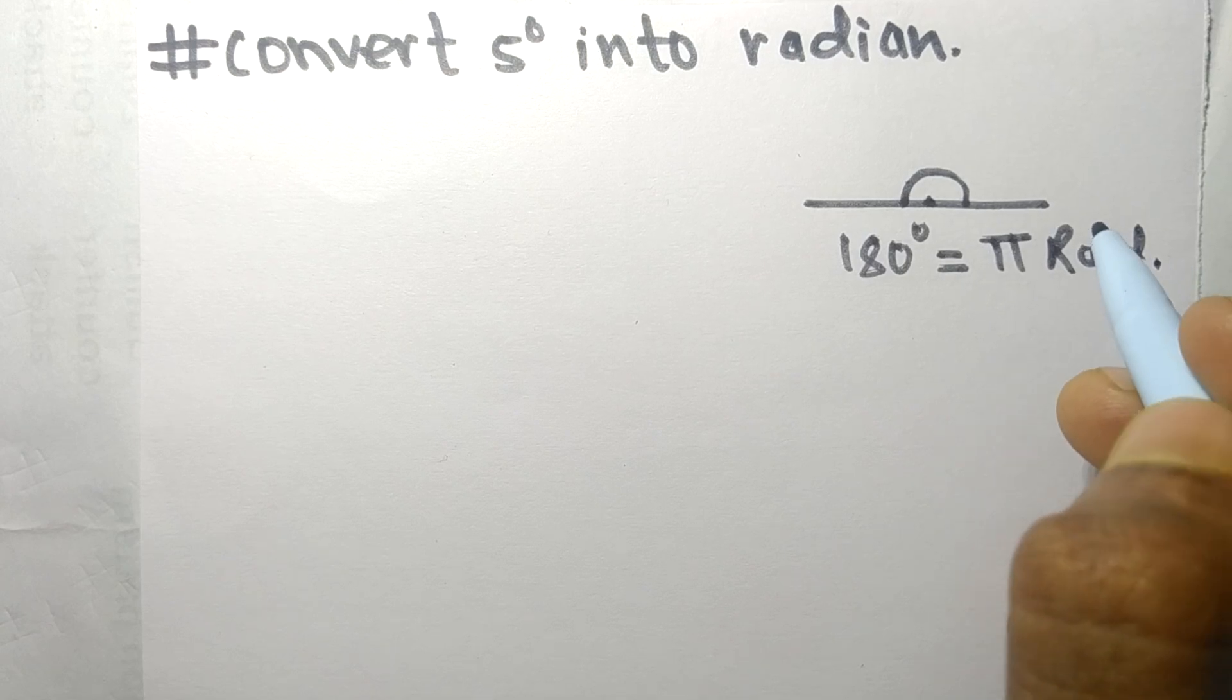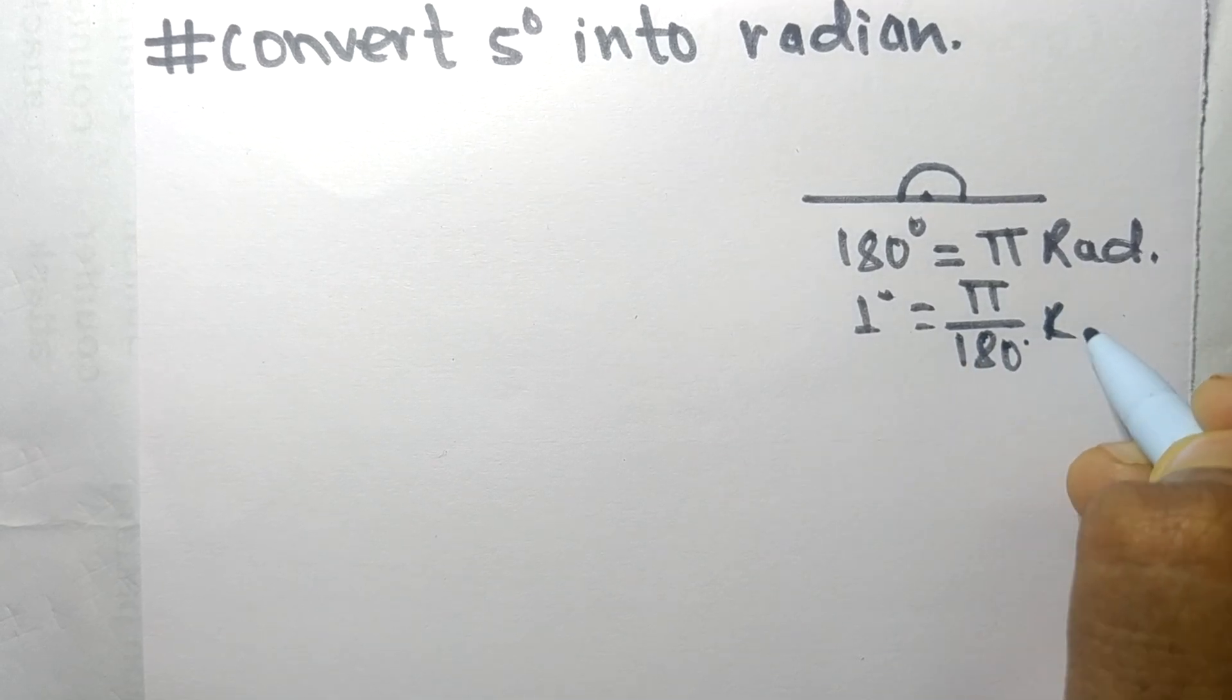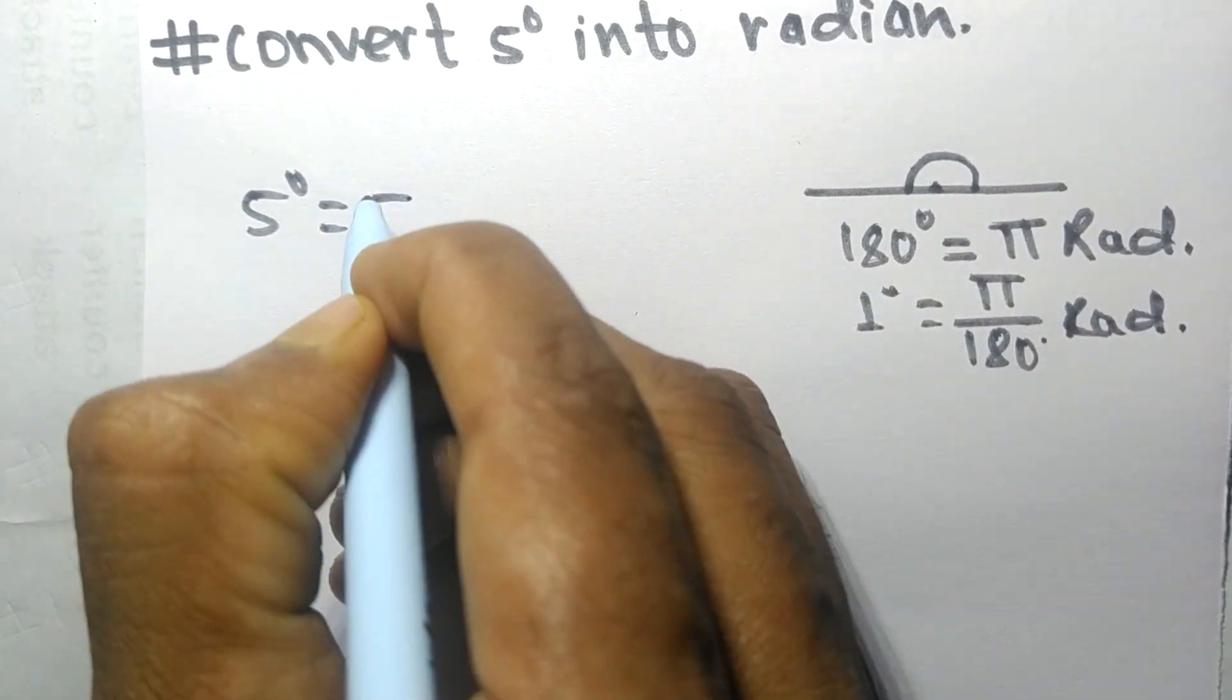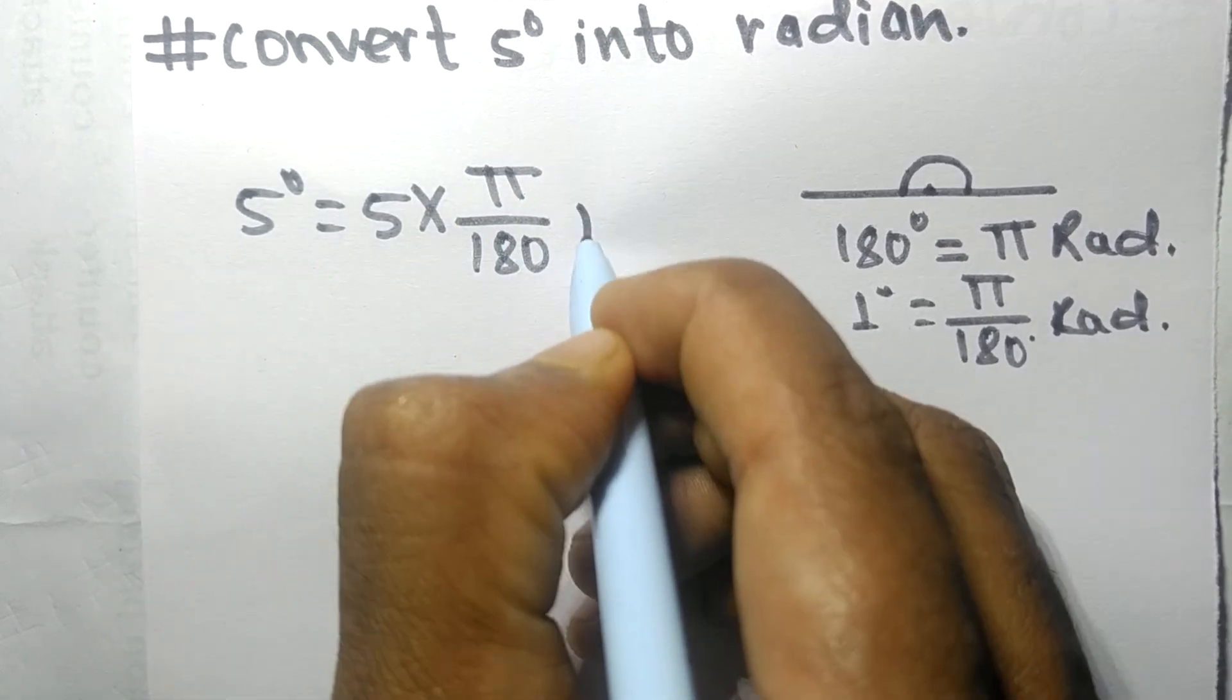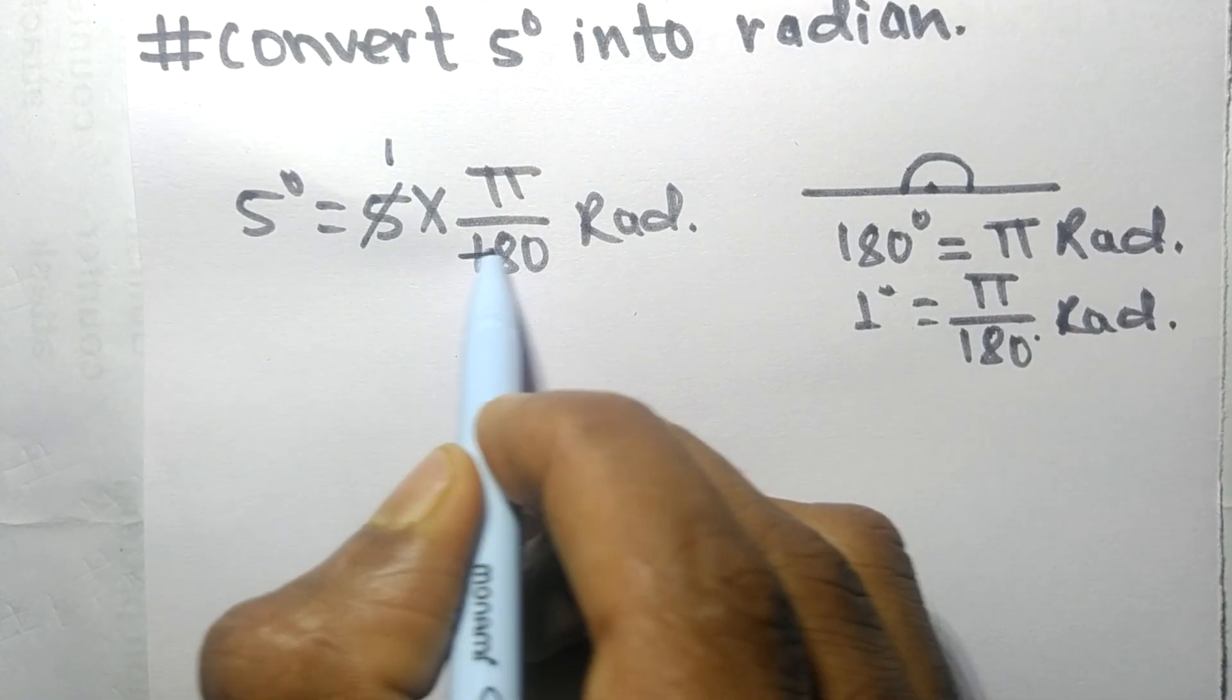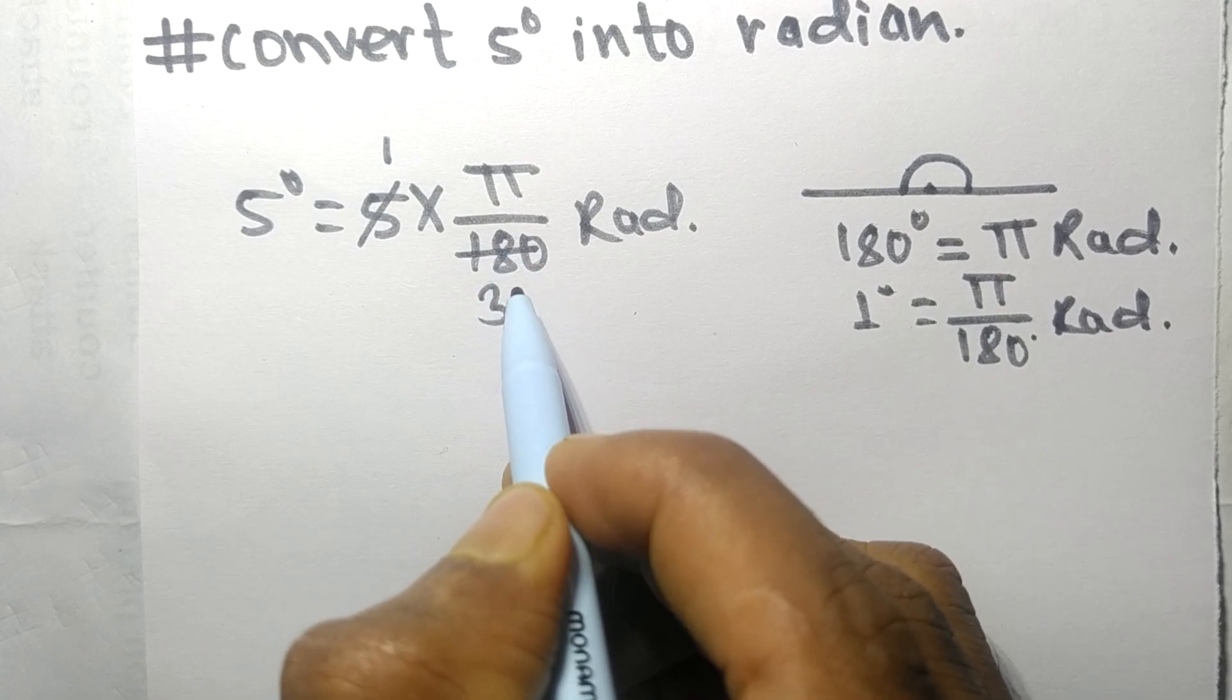In the same way, 1 degree is equal to π/180 radians. So here we have to convert 5 degrees. 5 degrees is equal to 5 times π/180 radians. Now we cancel the numbers: 180 divided by 5 equals 36.